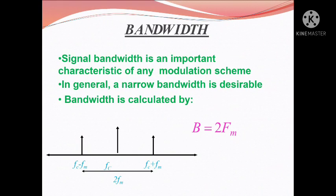Bandwidth: Signal bandwidth is an important characteristic of any modulation scheme. In general, a narrow bandwidth is desirable. Bandwidth is calculated by B equal to twice of fm, where fm is the message signal frequency.